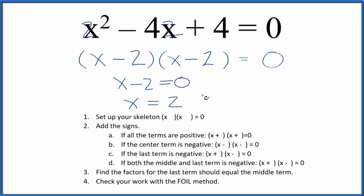One last thing. You could write this as x minus 2 squared because we have two of these up here. So that's another way you'll see this written after you've factored it.